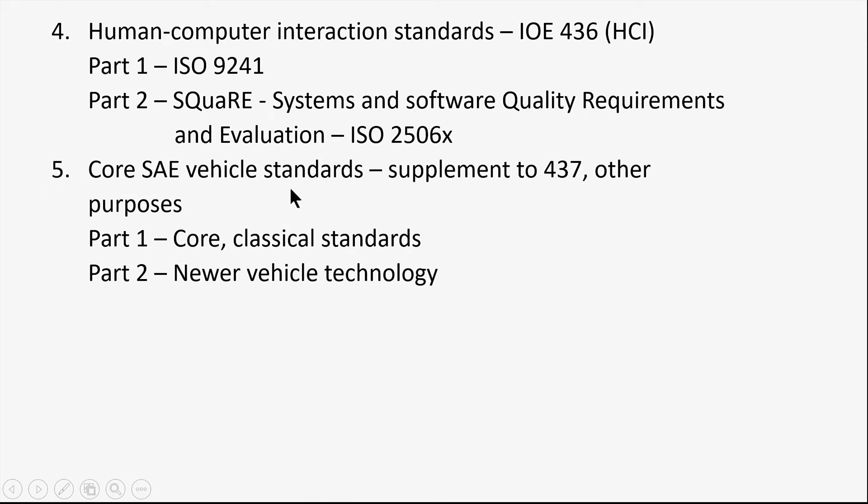The last set of documents covers core SAE vehicle standards, again to supplement IOE 437 materials but with broader purposes. This video will probably be the most widely viewed of the series because of its broad audience. It has two parts: first, core classical standards — oil viscosity, engine performance, and so forth — things that for many decades have been important to SAE; and second, newer vehicle technology such as electric vehicles and communications. SAE has literally written thousands of standards, so the idea is to give you a sense of what's out there and get you started on looking into SAE materials.